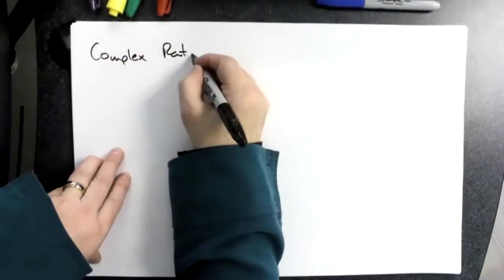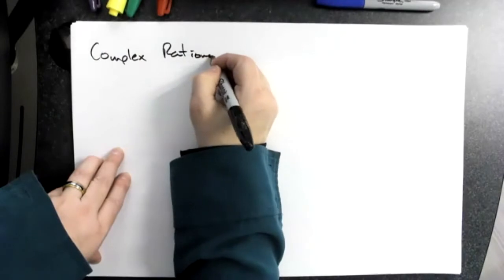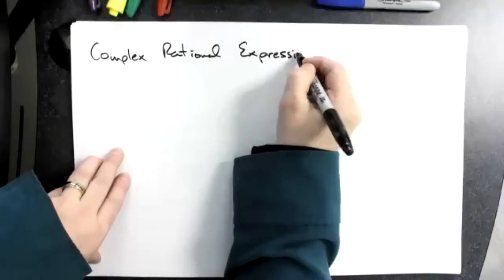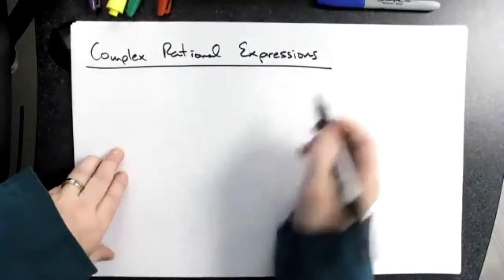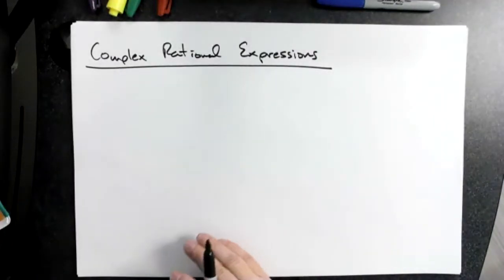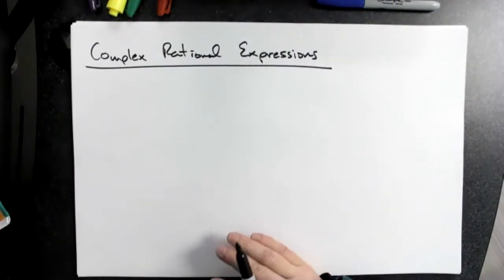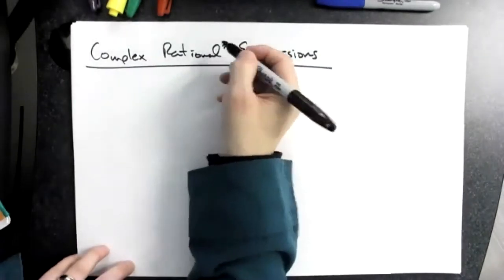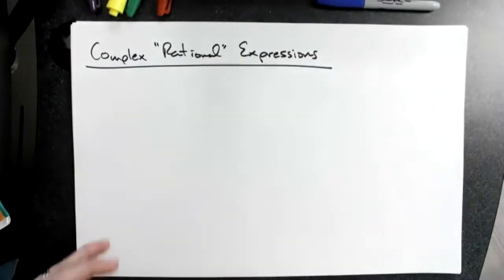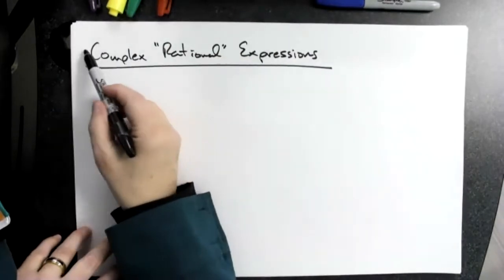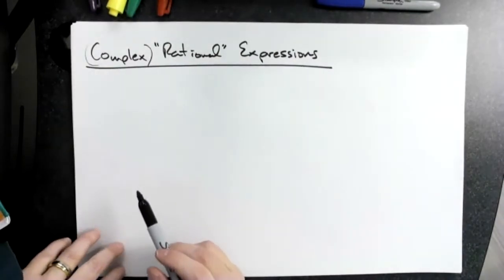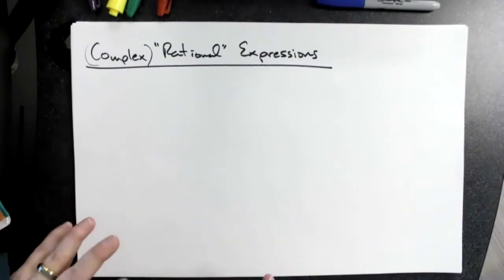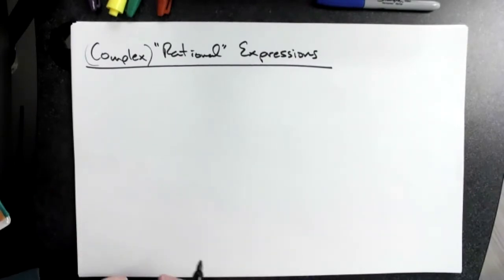Rational expressions — they can be very complicated or not so complicated. Basically, I'm going to have a fraction, because that's what the word 'rational' tells me. But then there's this word 'complex,' which means it's going to be a fraction in the numerator and/or another fraction in the denominator.